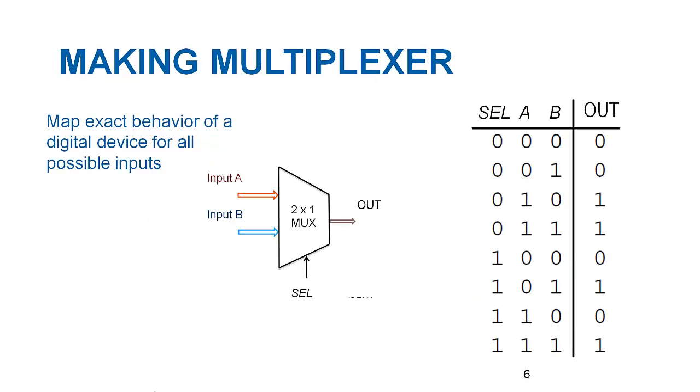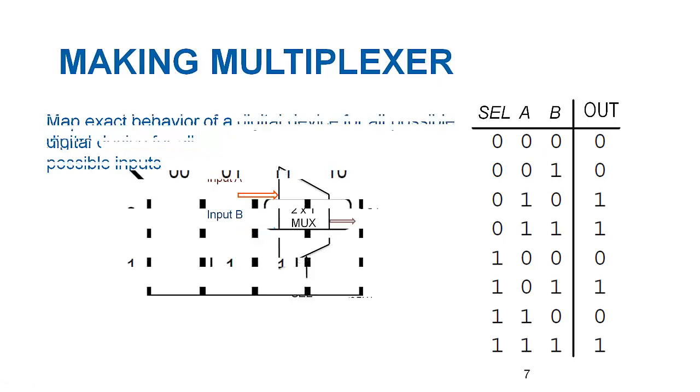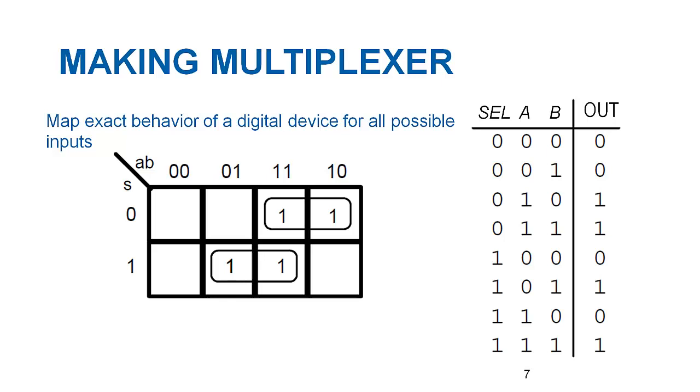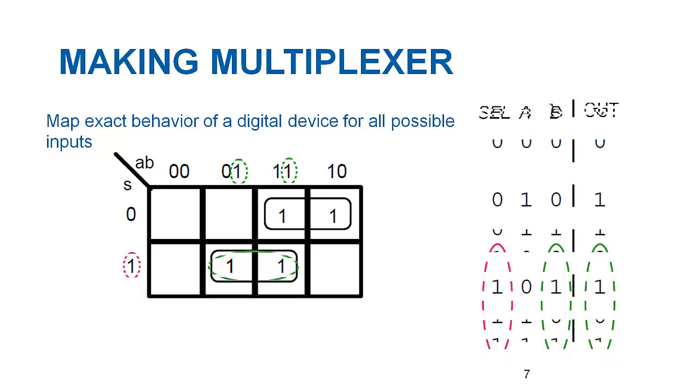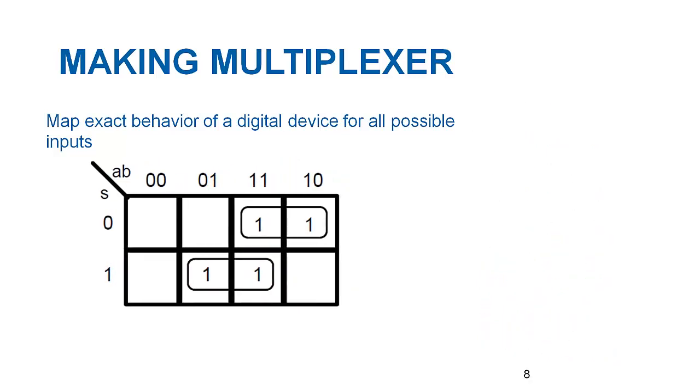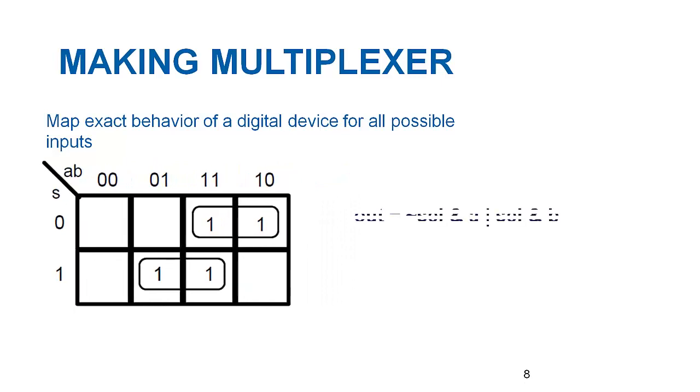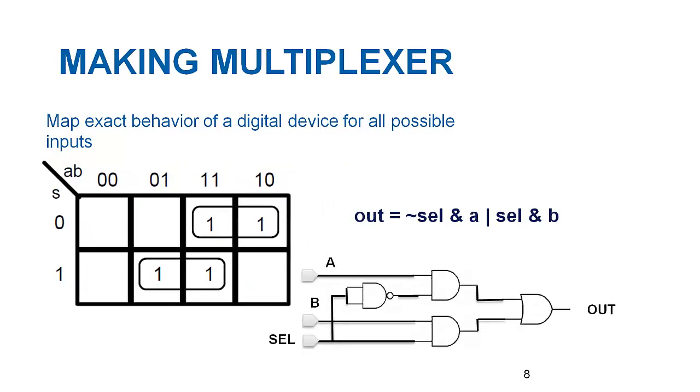The very first step in making a digital circuit is to map its exact behavior in a truth table or a K-map. Look at the behavior of a two input multiplexer and we can observe that the output line is reflecting input A when SEL is equal to 0, whereas B is mirrored on output when SEL is equal to 1. This mapping helps in building up a logical equation and then to a suitable arrangement of logical gates in order to achieve the behavior of a circuit.